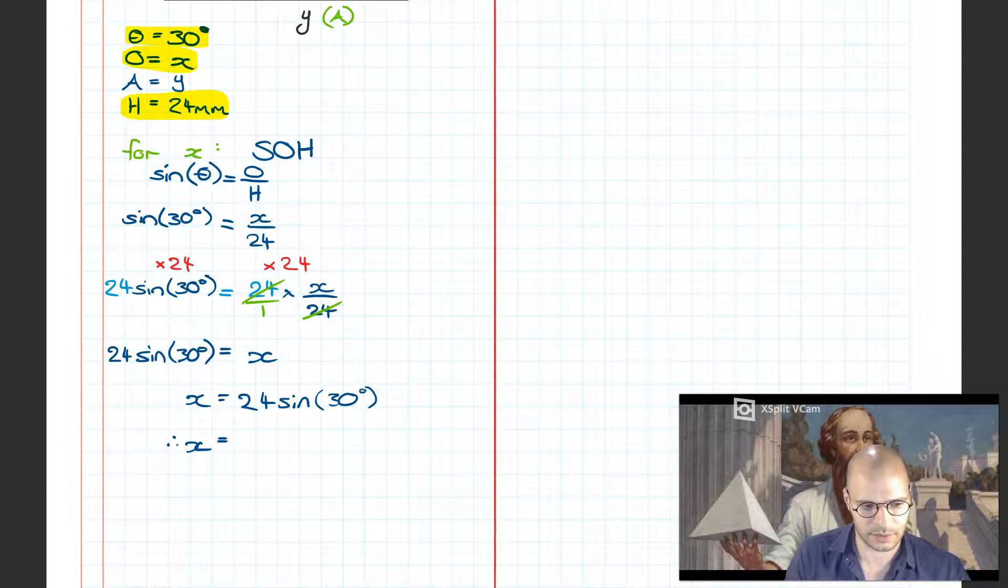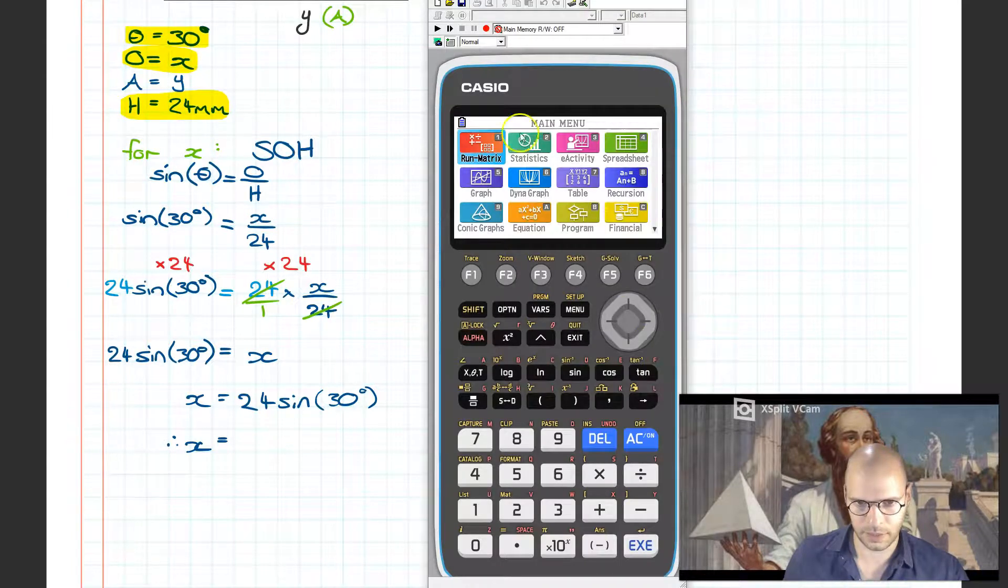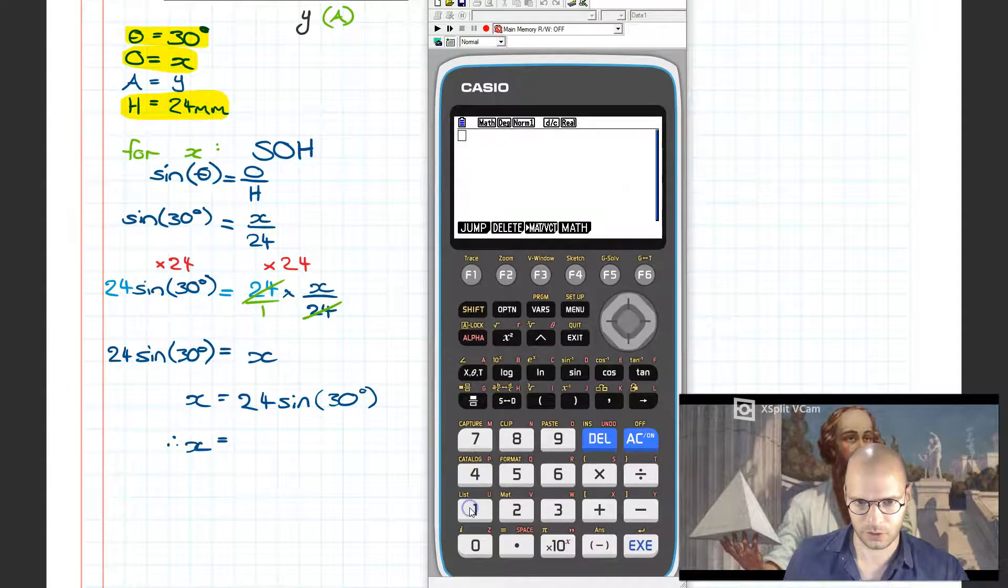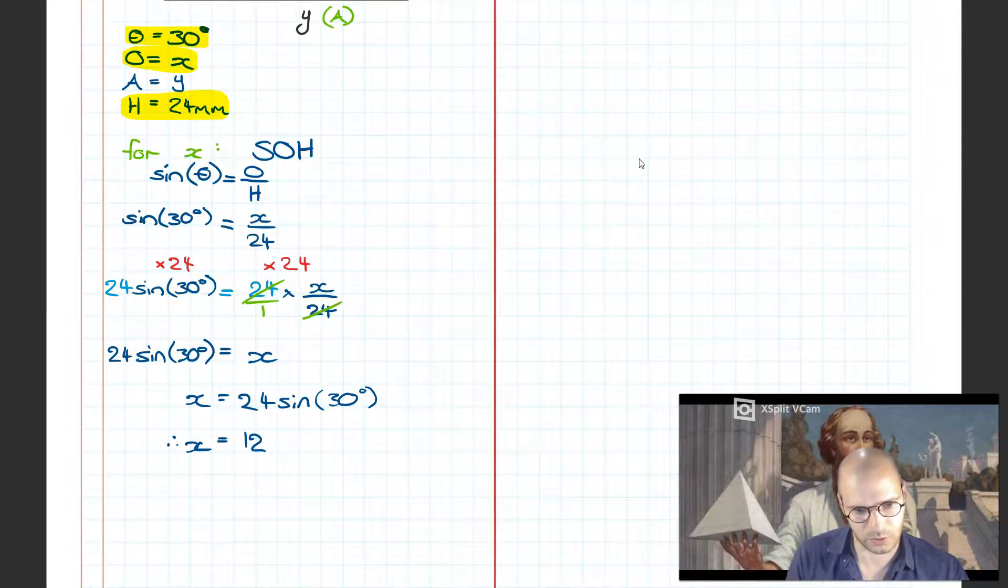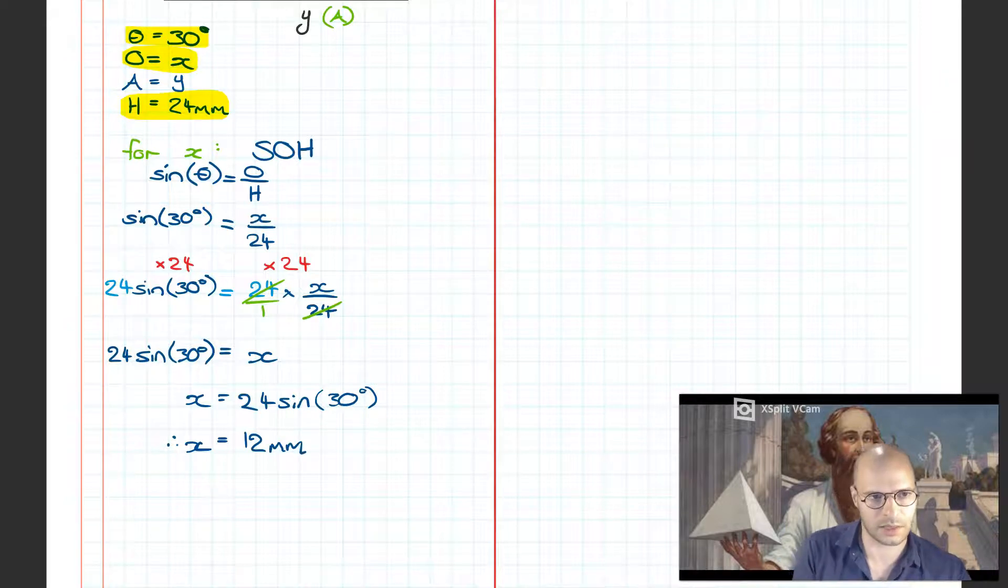Now we get to the point where we need to use our calculators. I'm going to go into run matrix mode. Putting in this expression on the right, here we go, 24 sine in parentheses, I'll write 30, then I'll go execute. This gives us a side length of 12. Of course this has units, and the units are millimeters. Thus we solve the unknown quantity that is X.